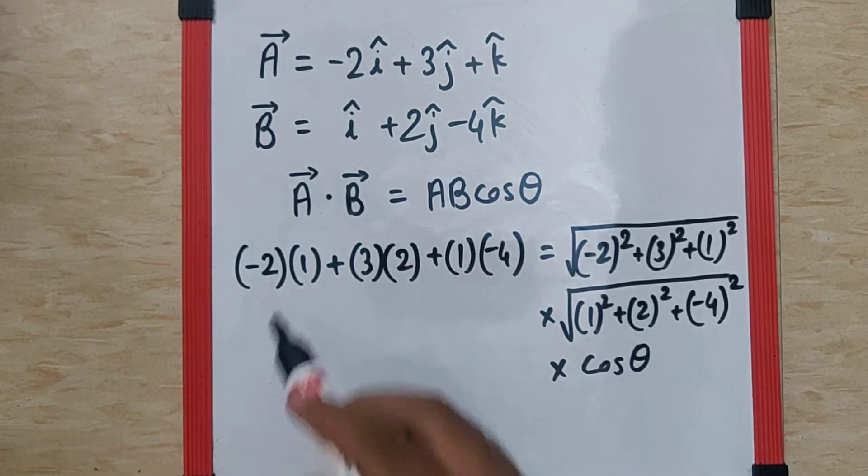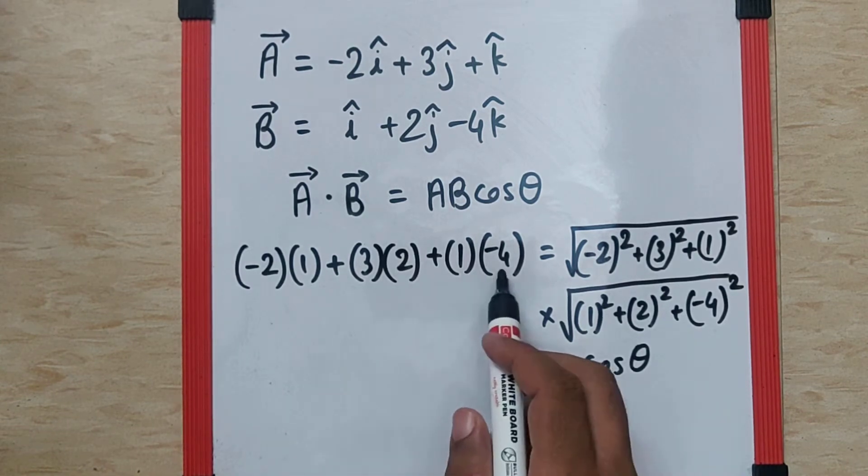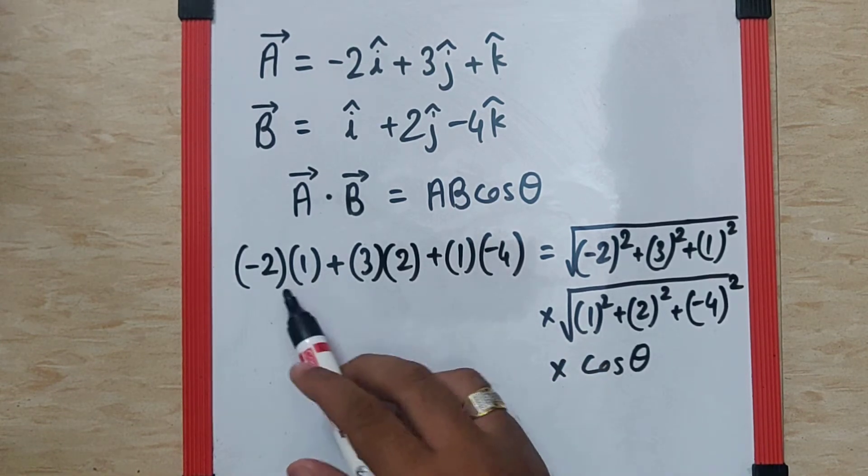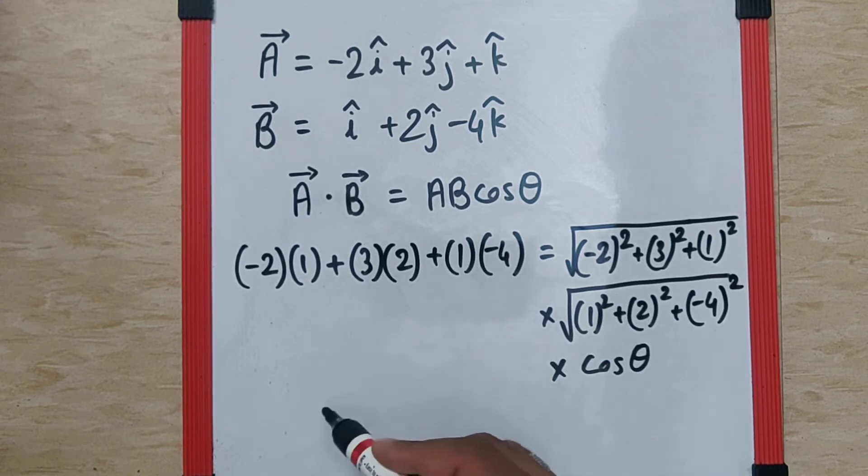Now, if you check, this is minus 2, this is 6 and this is minus 4. That is going to be minus 2 minus 4 as minus 6 plus 6 will give me 0.